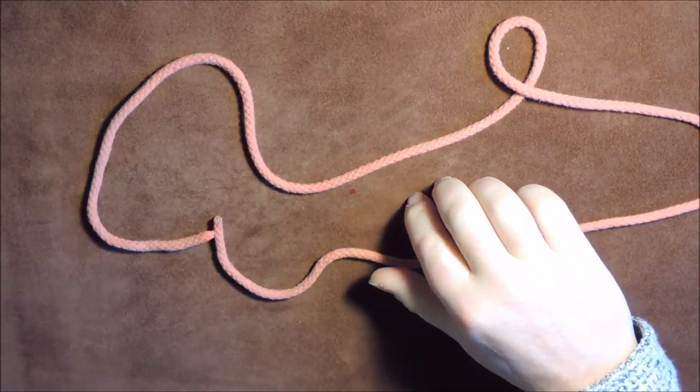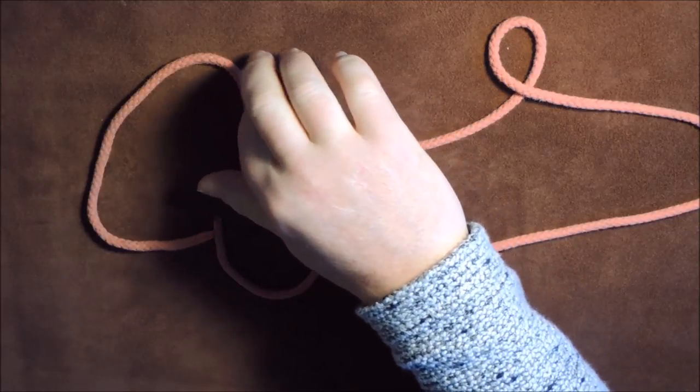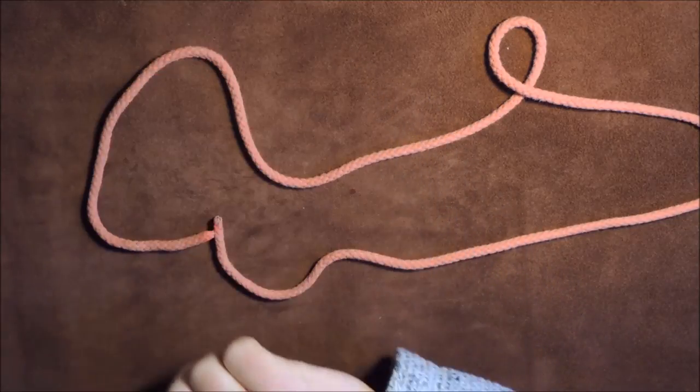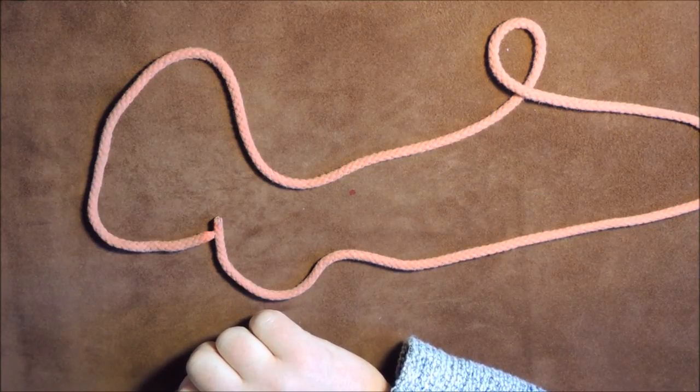I'll give you some visuals here whilst I'm reading it. The essential knot to prevent a sheet or halyard running through a block. The figure of eight also forms the basis for many other fancier knots.